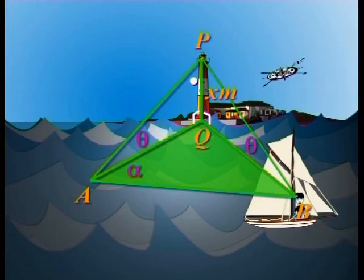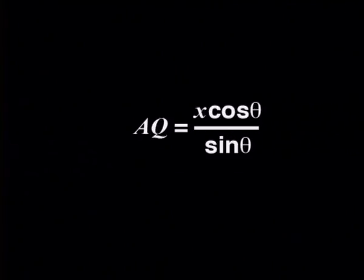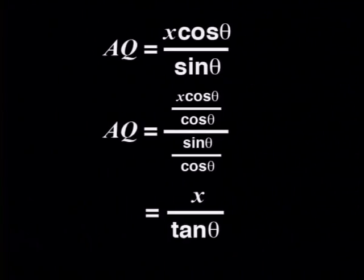Could the sine rule have been used instead? Well, the sine rule applies to any triangle, so in triangle APQ we need angle APQ, which is 90 minus theta, because the angles add up to 180 degrees. So AQ divided by sin(90 minus theta) equals X divided by sin theta, meaning AQ equals X times cosine theta divided by sin theta. That's the same result — dividing both numerator and denominator by cosine theta confirms they are identical.